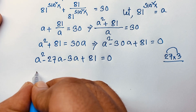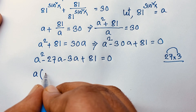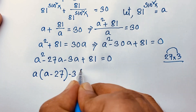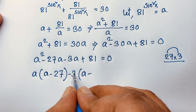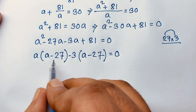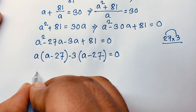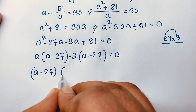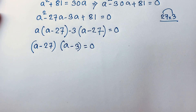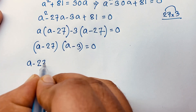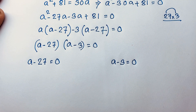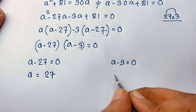Taking a as common from the first two terms gives a(a − 27), and taking −3 common from the last two terms gives −3(a − 27). So the factored form is (a − 27)(a − 3) = 0, giving two cases: a = 27 or a = 3.